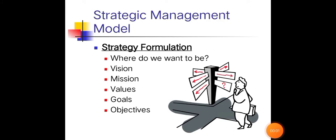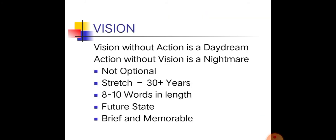In the strategic management model, there is strategy formulation. This includes knowing where you want to be, and of course there must be a vision, mission, values, goals, and objectives.